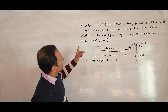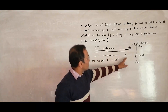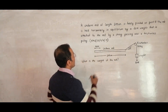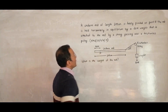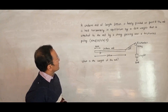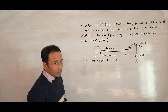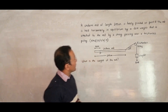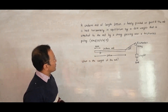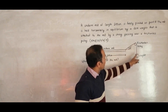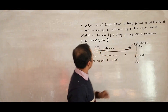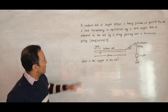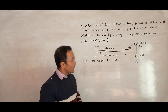It says that a uniform rod of length 200 centimeters is freely pivoted at point P. The rod is held horizontally in equilibrium by a 60 Newton force attached to the rod by a string passing over a frictionless pulley. We have to find the weight of the rod.